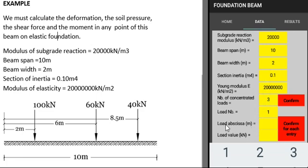For load number one, load abscissa two meters, load value 100 kilonewtons. And we must confirm for each entry by pressing in this box.